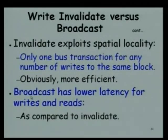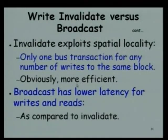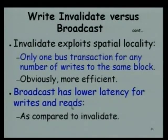On the other hand, a write-broadcast is also a snoopy solution. For every write, it has to be broadcast on the bus, and as a result the bus traffic will be too much - and we have already seen that bus is a bottleneck because several processors are trying to share it. The invalidate protocol has the important advantage of reducing traffic on the bus. But does write-broadcast have any advantage? Yes - when a processor tries to read, it already has the updated copy and does not have to wait. The latency for reads and the first write will be smaller compared to the invalidate protocol.